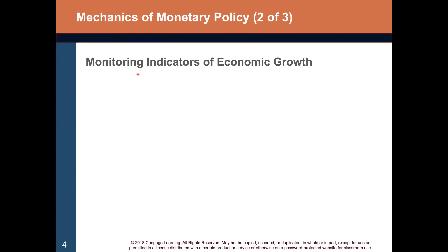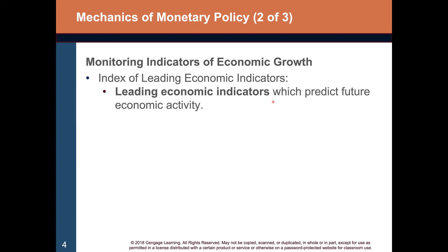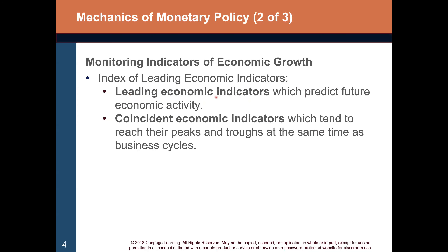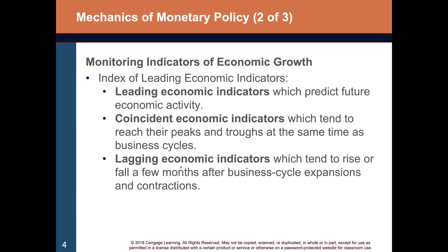They'll look at other indexes such as the industrial production index, retail sales index, and home sales index. These are all indicators that the Fed will monitor and discuss as they meet, and they'll use these to determine forecasts for economic growth. Now we're going to discuss the index of leading economic indicators. Leading economic indicators predict future economic activity — they come before what's going to happen. There are also coincident economic indicators, which reach their peaks and troughs at the same time as business cycles. And there are lagging economic indicators, which tend to rise or fall a few months after business cycle expansions and contractions.